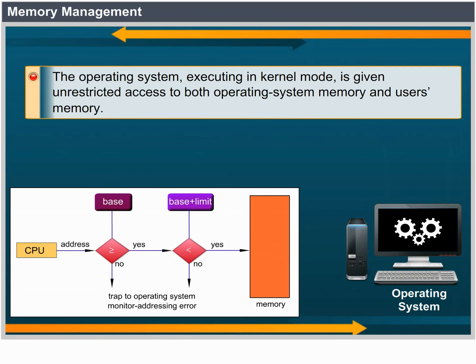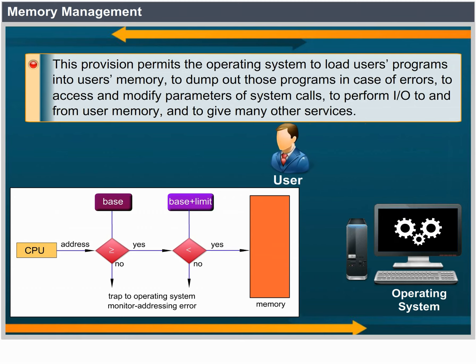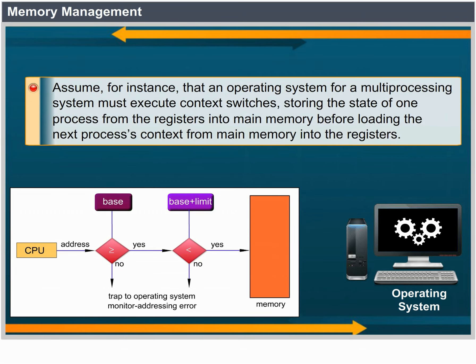Since privileged instructions can be executed only in kernel mode and only the operating system executes in kernel mode, only the operating system can load the base and limit registers. This allows the operating system to change the value of the registers but prevents user programs from changing the register contents. The operating system executing in kernel mode is given unrestricted access to both operating system memory and users' memory, allowing it to load user programs, dump them in case of errors, access system call parameters, and perform input-output to and from user memory.